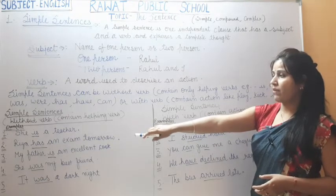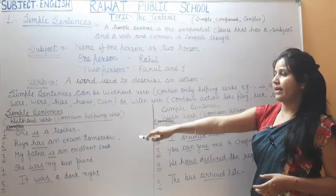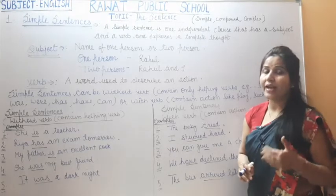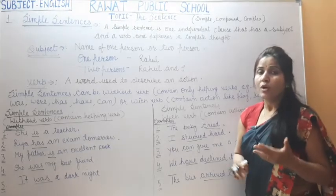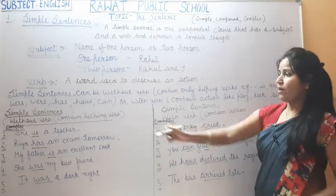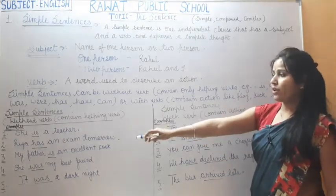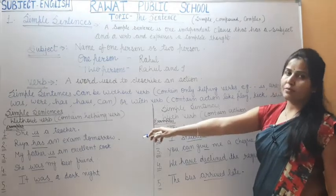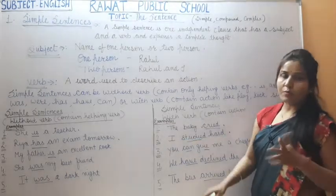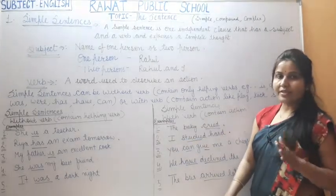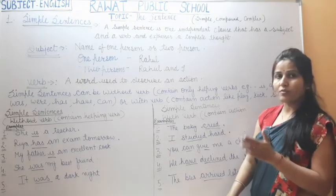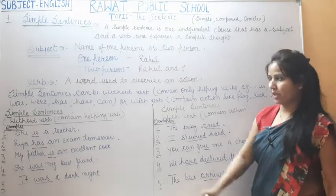Third example: 'My father is an excellent cook.' Here also 'is' is used to describe quality. In this sentence there is no verb — is is a helping verb and it is indicating quality.